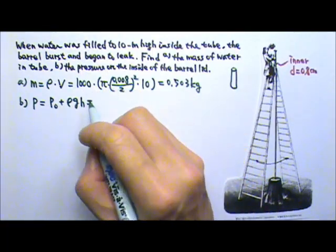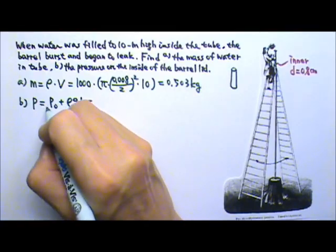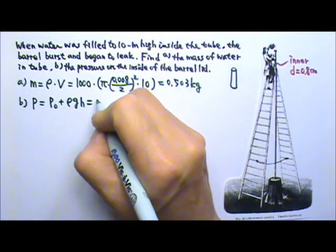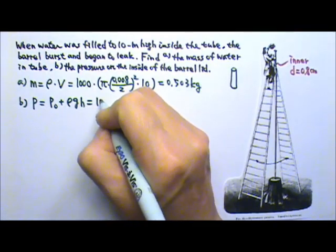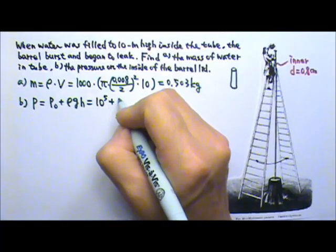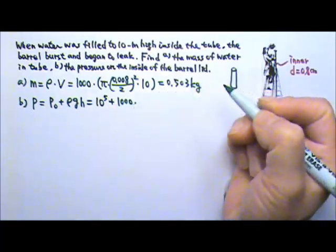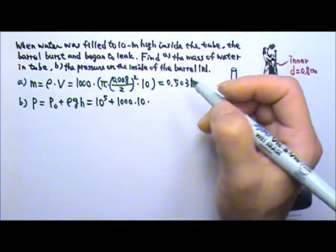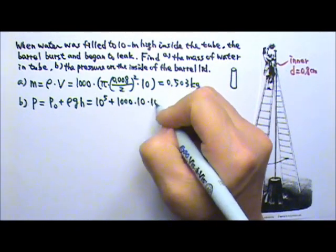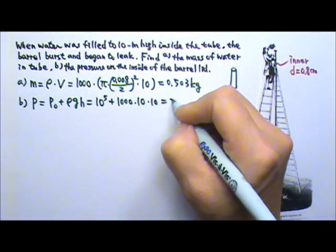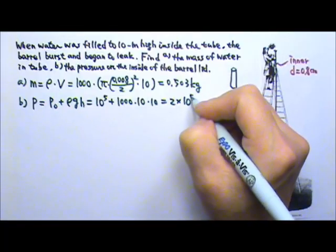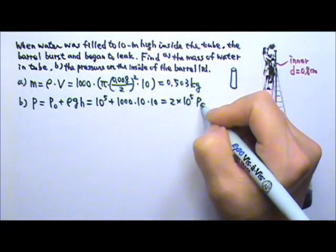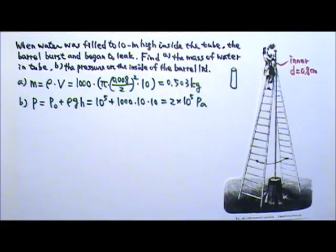If I want to use Pascals, then everything I put here has to be in standard unit. So it's 10 to the fifth Pascals plus the ρ a thousand times g times the height of the water column is 10. So this gives me 2 times 10 to the fifth Pascals. Twice the atmospheric pressure.